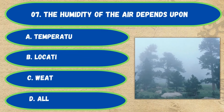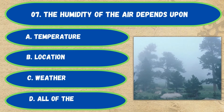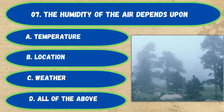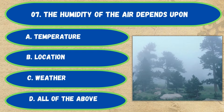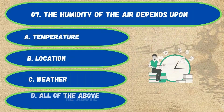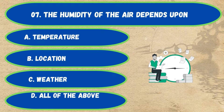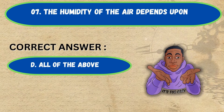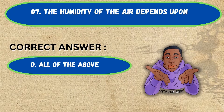Question number 7. The humidity of the air depends upon: option A, temperature; B, location; C, weather; D, all of the above. The correct answer is option D, all of the above.